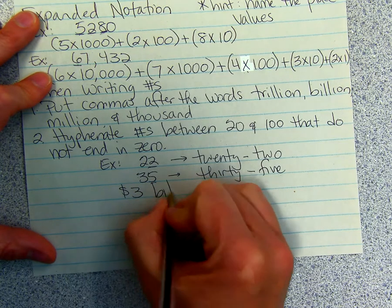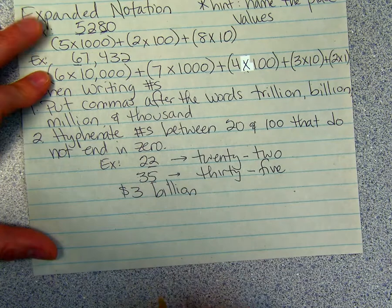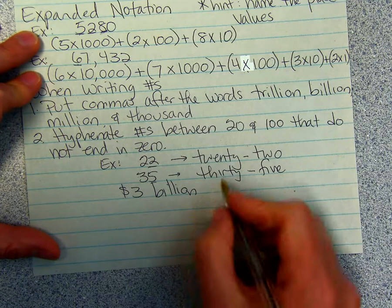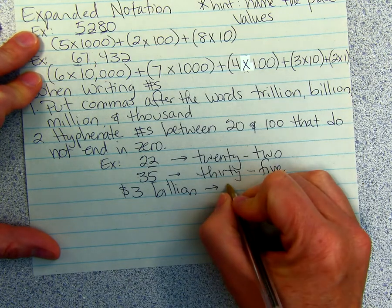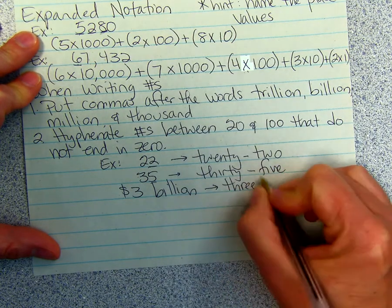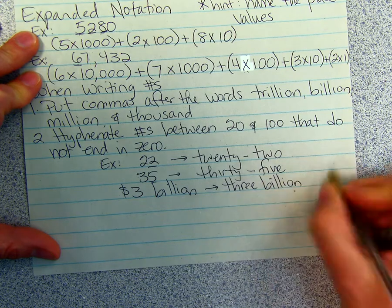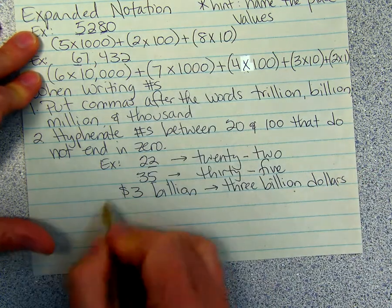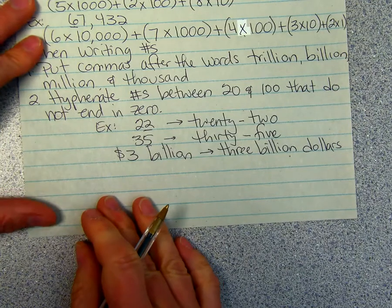If you have this number right here, you would write it 3 billion. And then you put dollars, because we're talking about dollars here. You want to have your label.